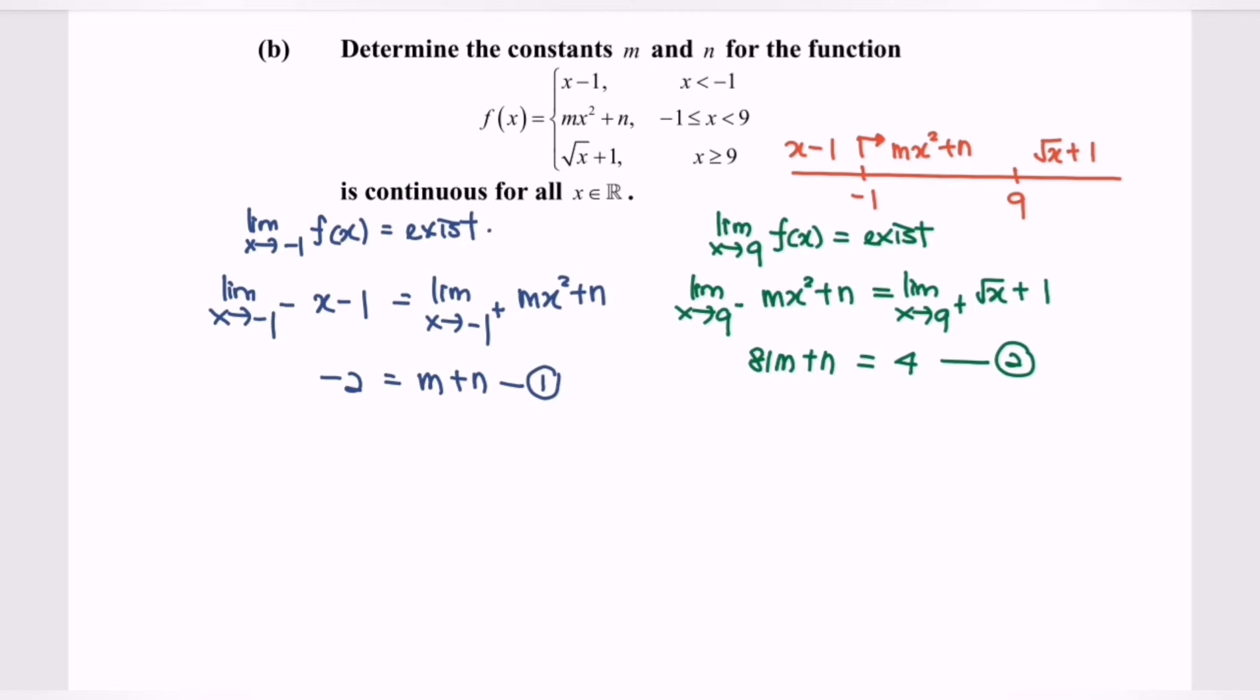By using the simultaneous equation, we are going to eliminate the n. We will have the second equation minus the first equation.